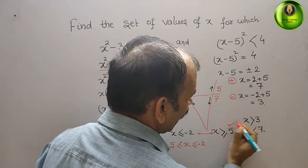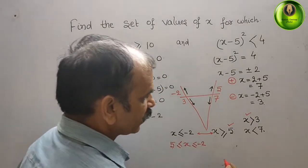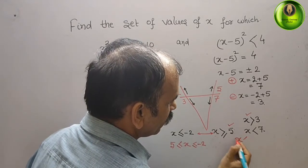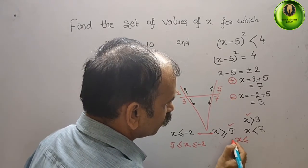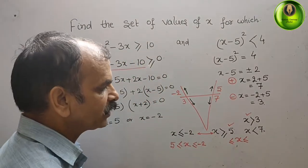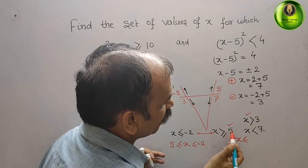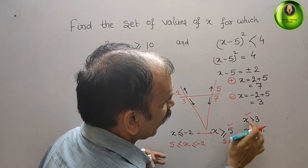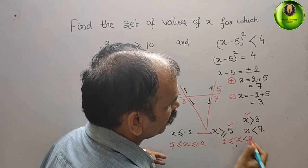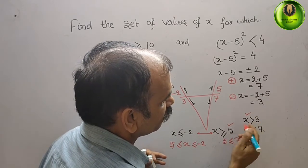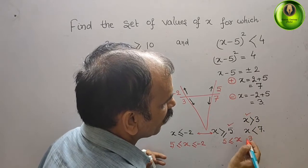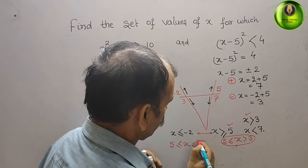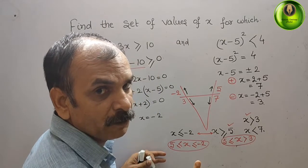Checking the next pair: x greater than or equal to 5 combined with x greater than 3 — both are greater, so there is no valid intersection combination there. Then checking x less than or equal to minus 2 combined with x greater than 3 — opposite signs, so again no combination. Similarly, x less than or equal to minus 2 combined with x less than 7 — the signs differ, so that is not a valid range either.